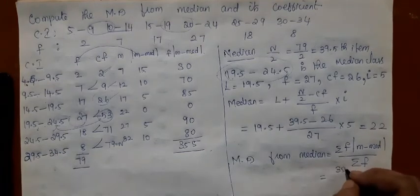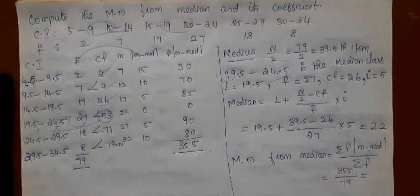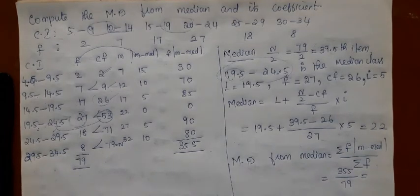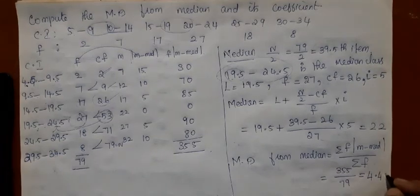So mean deviation from median is 355 divided by 79 which is 4.49.